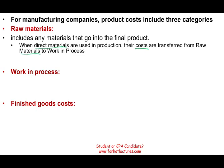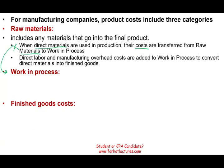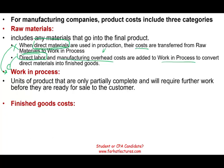Once that material starts to make the product — once we start to put the car together — it becomes work in process. Direct labor costs and manufacturing overhead costs are also added to work in process. Any cost of people working on that car, plus manufacturing overhead, which is any manufacturing cost other than direct material and direct labor, are all added to the work in process account to convert them into finished goods. That conversion process is called work in process or work in progress.